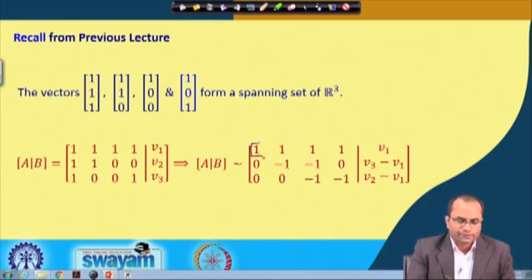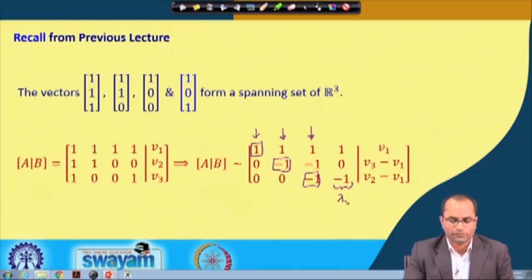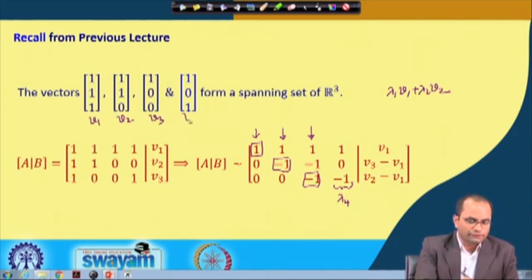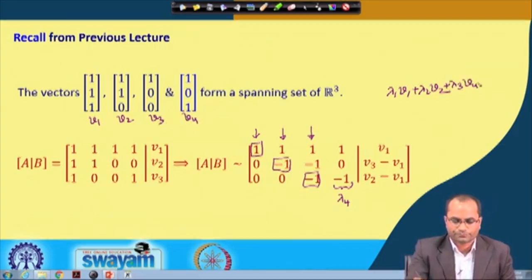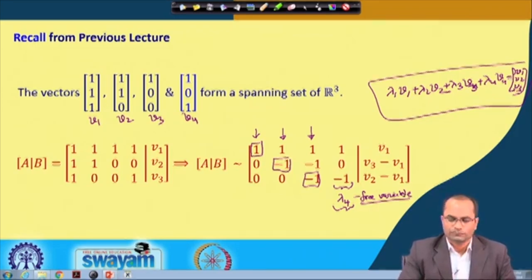What we observed is that there are 3 pivots: column 1 has a pivot, column 2 has a pivot, column 3 also has a pivot, while column 4 does not have a pivot — this is what we call the free variable. So lambda_4 in our linear combination is a free variable.